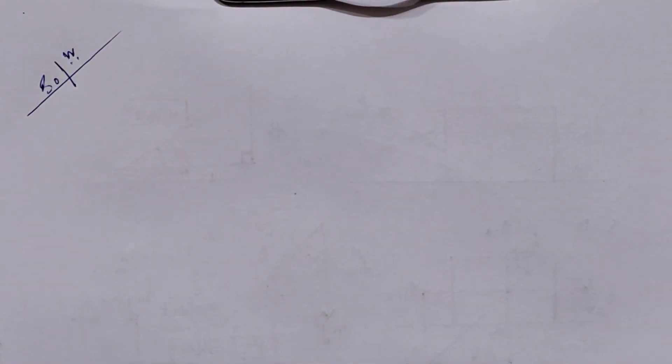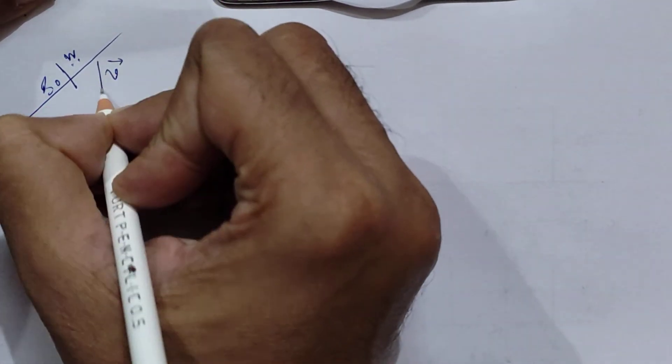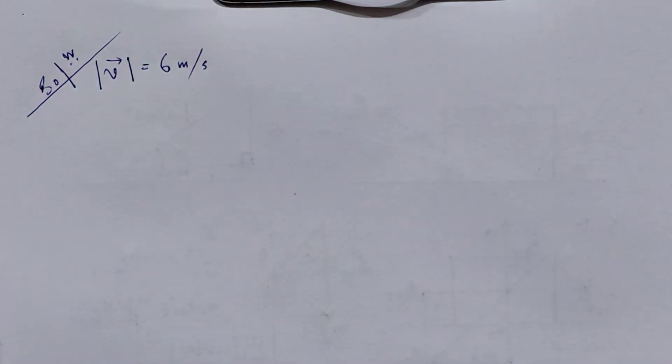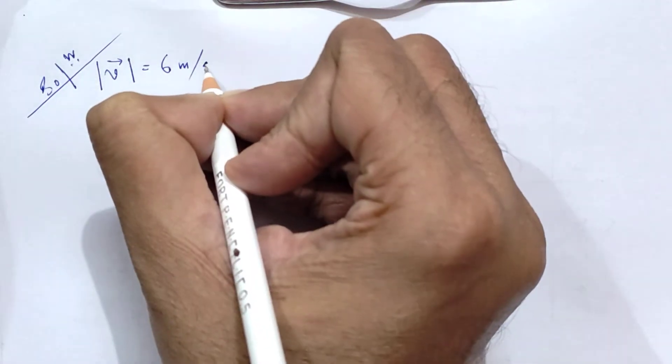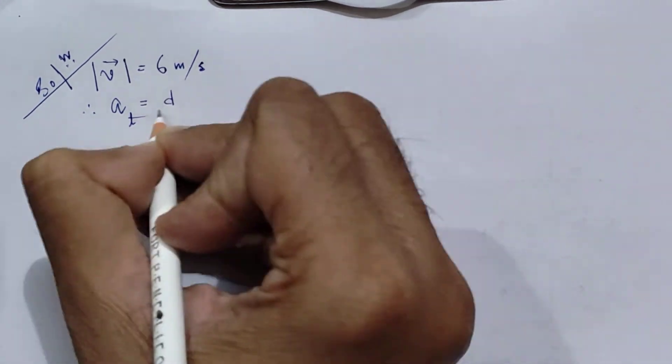So first and foremost thing, it is given that the skier is moving with a constant speed on this parabolic trajectory. So we can say that the speed is constant, this is 6 meter per second and that is constant.